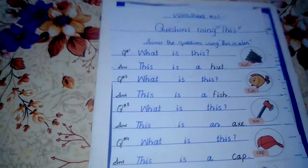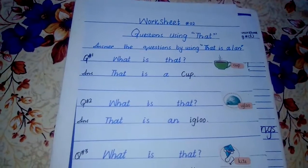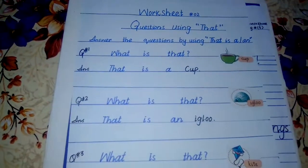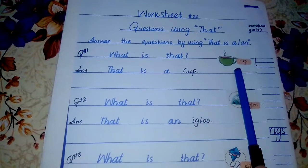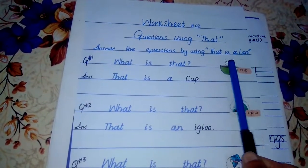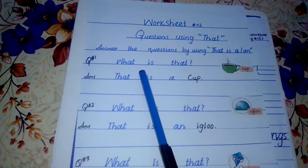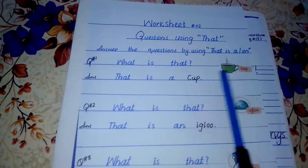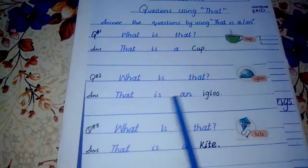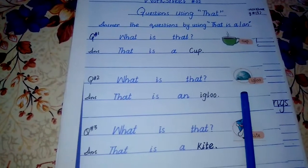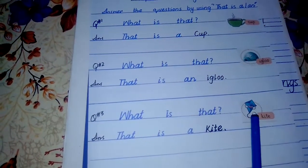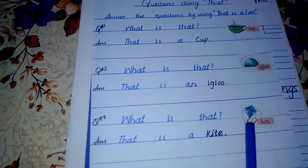Now open worksheet number two — questions using 'that'. Answer the questions using 'that is' and a or an. Question one: What is that? That is a cup. Question two: What is that? — 'Woh kya hai?' That is an igloo — 'woh ek igloo hai'. Igloo means 'baf ka gaar' — a snow house. Question three: What is that? — 'Woh kya hai?' That is a kite — 'woh ek patang hai'.